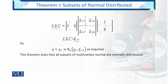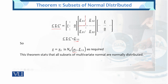Since z = x1, we conclude that x1 is multivariate normally distributed with mean vector mu1 and variance-covariance matrix sigma11, as required. This theorem states that all subsets of a multivariate normal distribution are normally distributed — meaning x1, x2, and every subvector each follow a normal distribution.